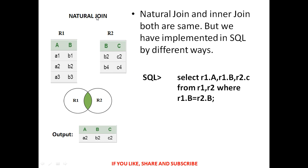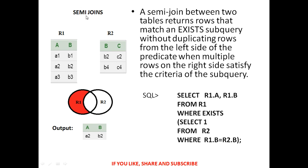Next is natural join. Natural join is similar to intersection operations. When both values are the same — that is, A2, B2 and B2, C2 are common — that is the output. Natural join and inner join are the same, but implemented in SQL differently. The SQL query is: SELECT R1.A, R1.B, R2.C FROM R1, R2 WHERE R1.B = R2.B.